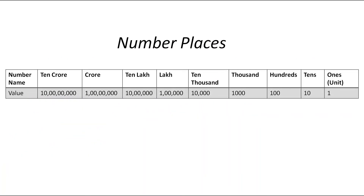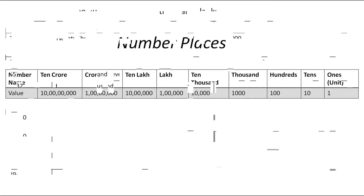Before moving to the questions, let me introduce the number places. Here are the names of the number places and their values. Starting from the right: 1's place, 10's place, 100's place, 1000, 10,000, then comes lakh, then 10 lakh, then crore, and then 10 crore. Let's move to the questions now.